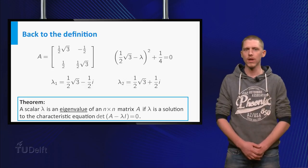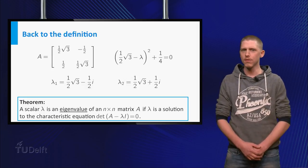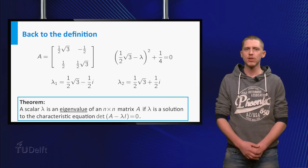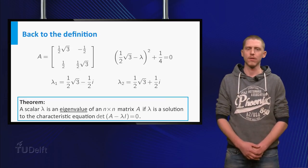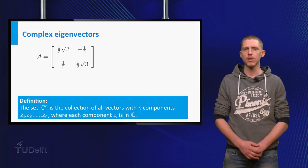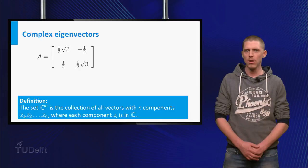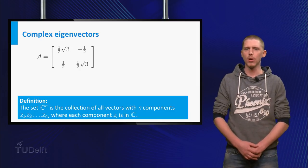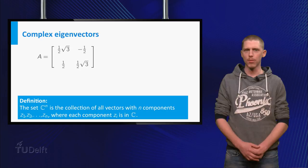You already have seen that A has no real eigenvectors, so A must have complex eigenvectors. At this point we need to define a new set of vectors, Cn, which are all vectors with n components where each component is a complex number.